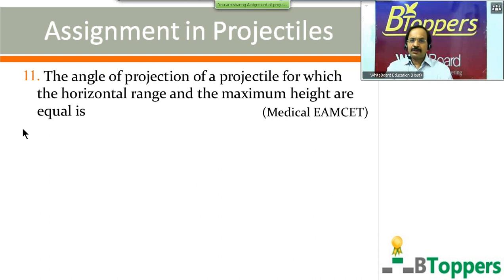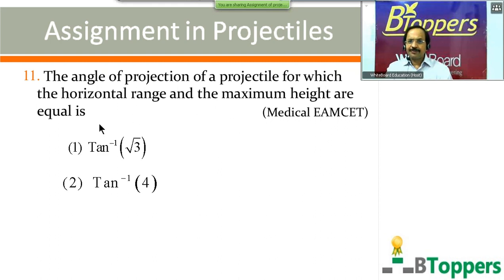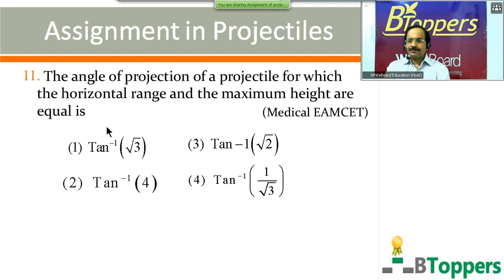Question number 11: the angle of projection of a projectile for which the horizontal range and maximum height are equal is — four options are shown on screen. Come on, try it. This question was also given in previous assumption examinations in the medical entrance.